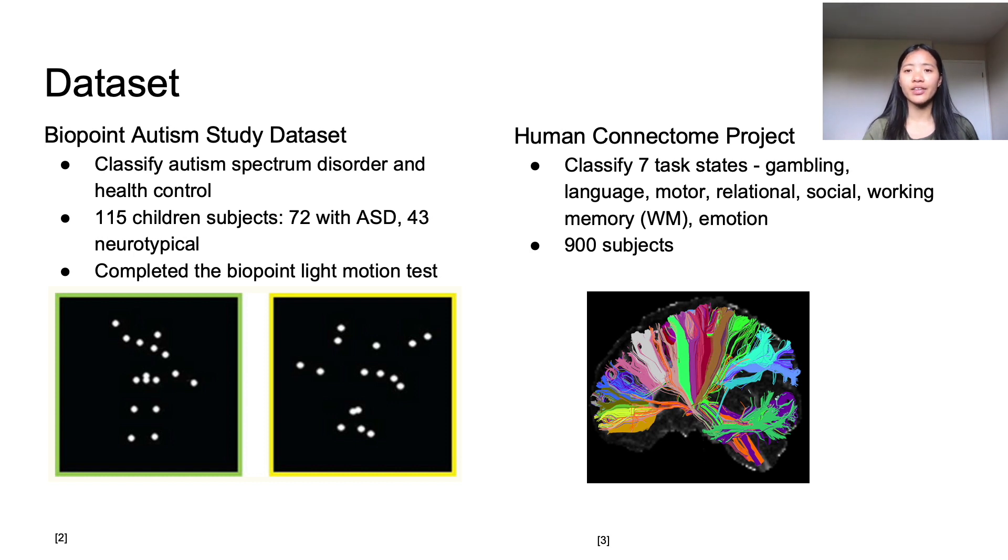The second dataset, the Human Connectome Project, is a large-scale research project with over 900 subjects that aims to share a deeper understanding of the connections in the brain. The fMRI images were produced when individuals completed seven tasks pertaining to gambling, language, motor, relational, social, working memory, and emotion.